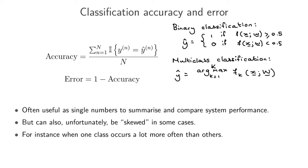If you write it out in this formal way, the accuracy on a test set can be calculated by summing up the indicator function over your N test points. What you're doing is checking whether the ground truth label equals the prediction - if so, this returns one; if not, we add a zero. This is just a mathematical way of writing the fraction of test points assigned the correct class.